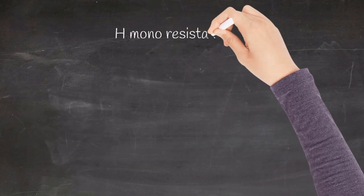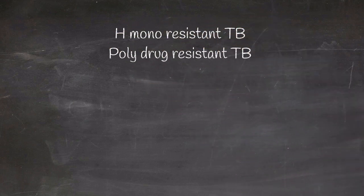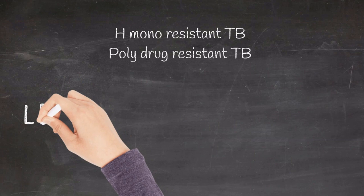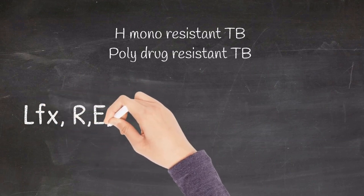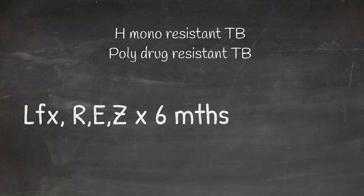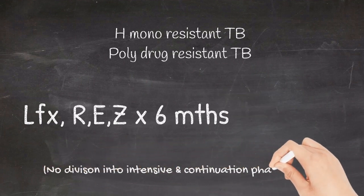Management of H monoresistant or poly drug resistant tuberculosis. Though both these categories are different, they are managed in the same fashion. The drugs include levofloxacin, rifampicin, ethambutol, and pyrazinamide given for a period of six months. You can note that there is no division here into intensive and continuation phase.